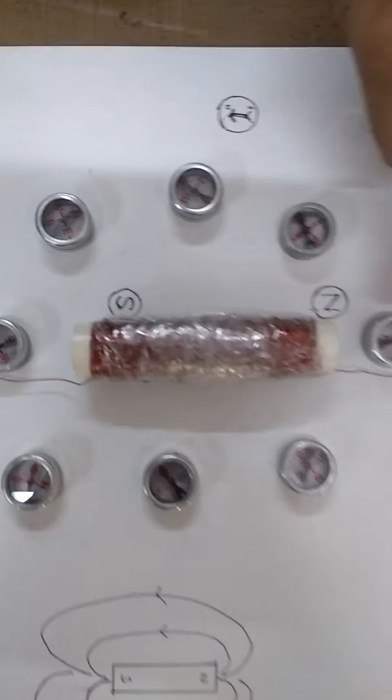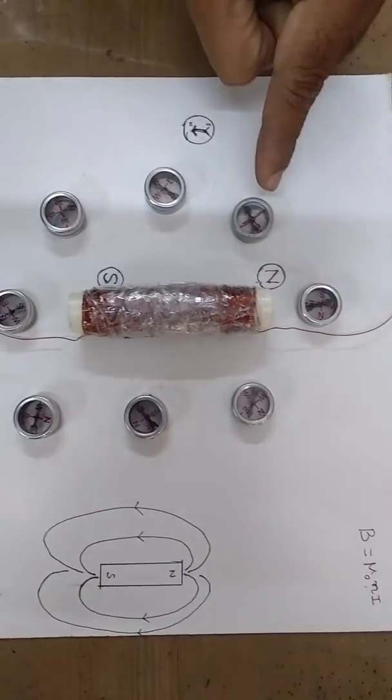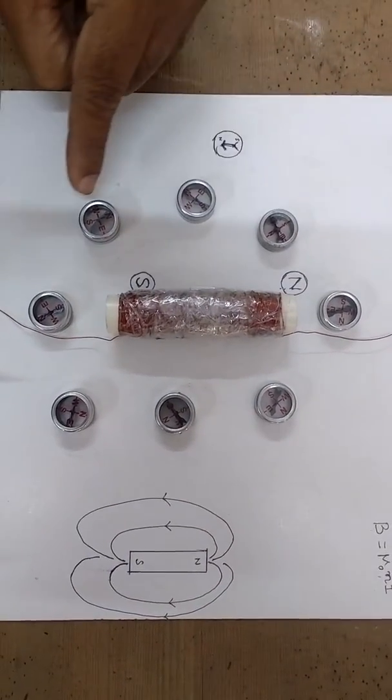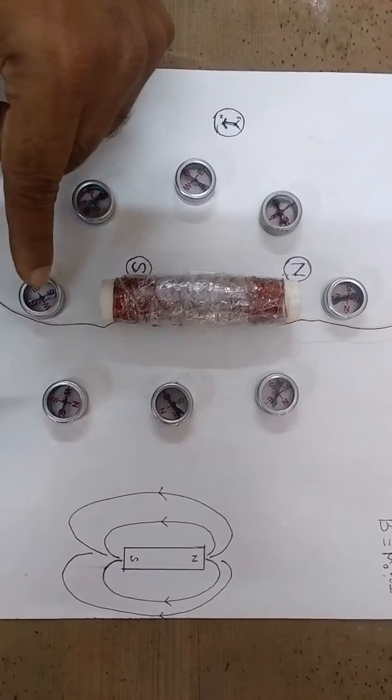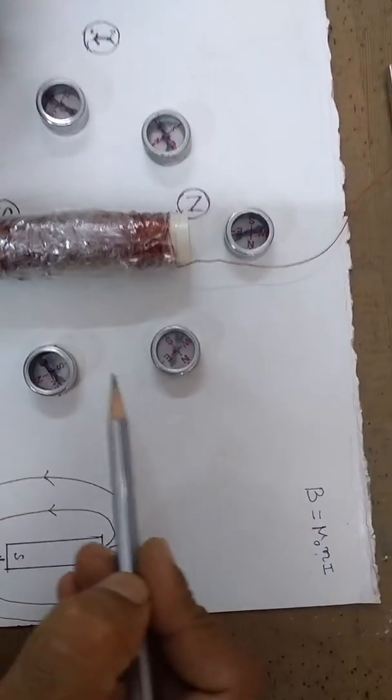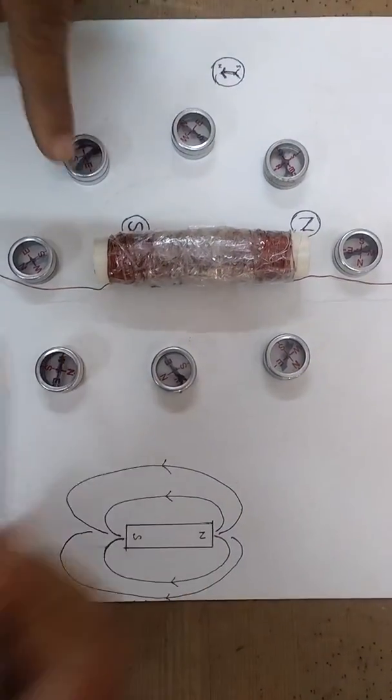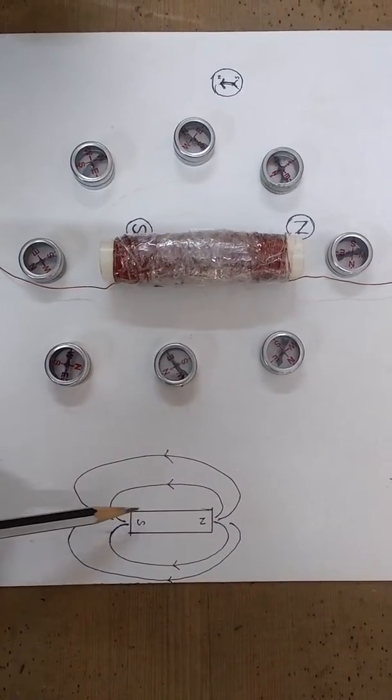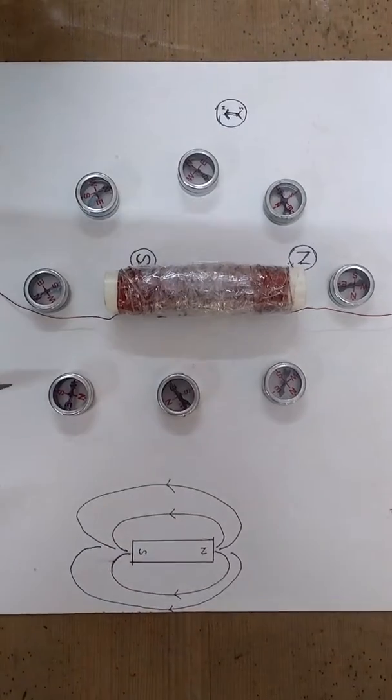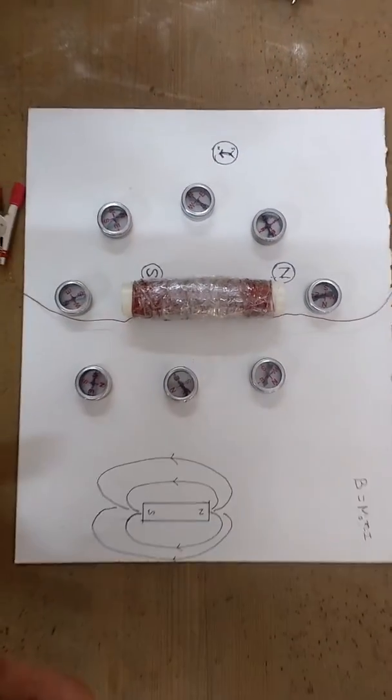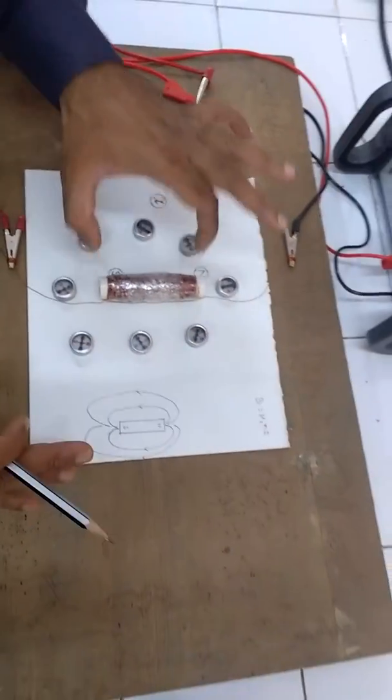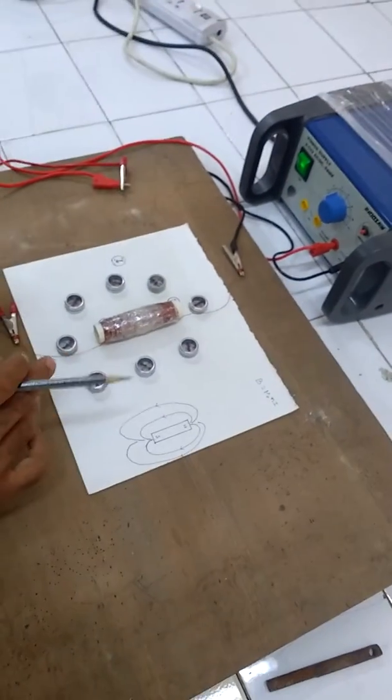And you can see all these compass needles, the north poles have been aligned in this direction. And again from here also you can see the north pole is turning like this. That means these field lines, they resemble the field lines around a bar magnet. So we can say that a current carrying solenoid behaves like a bar magnet.